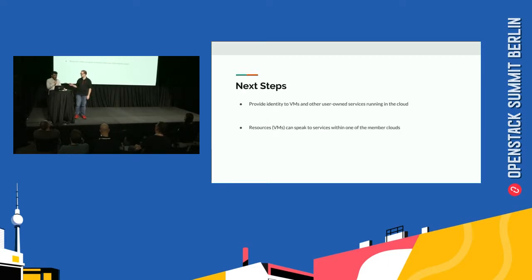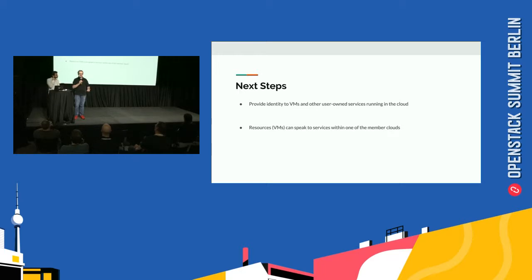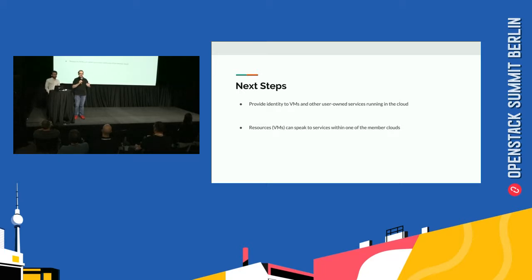The next steps beyond what Mix and Match and Keystone do is to allow for providing direct access to services within your cloud to your resources, such as a VM. What if a VM wants to talk to a monitoring service and inject data, or figure out where it's supposed to log its data? Something along those lines — allowing you to provide that level of integration and identity.